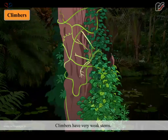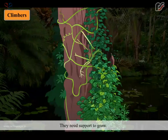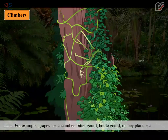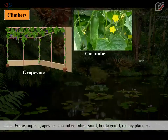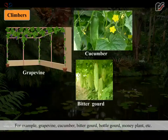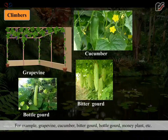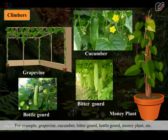Climbers have very weak stems. They cannot stand straight on their own and need support to grow. For example, grapevine, cucumber, bitter gourd, bottle gourd, money plant, etc.